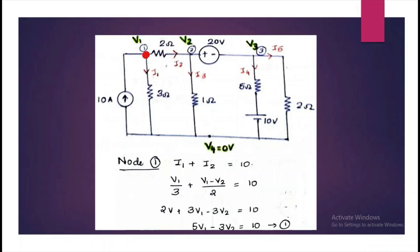At node 1, mark the outgoing currents that is I1 and I2. 10 ampere is already given as the incoming current. So let us write the equation for node 1 by KCL. I1 plus I2 is equal to 10. So I1 can be written as V1 by 3 ohm and I2 can be written like V1 minus V2 by 2 ohm. So rearrange this equation and we will get equation 1.